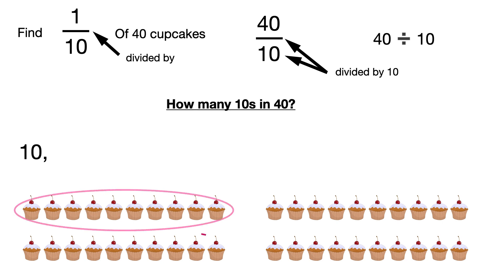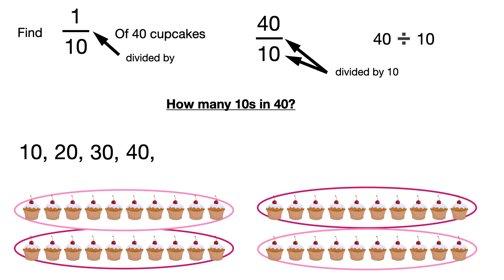1, 2, 3, 4. So there are 4 tens in 40. 1 tenth of 40 is 4.